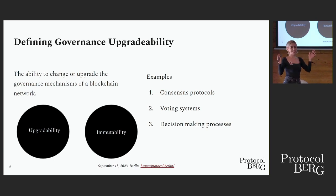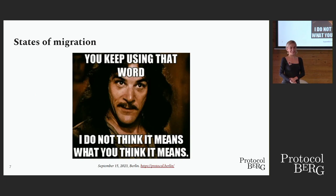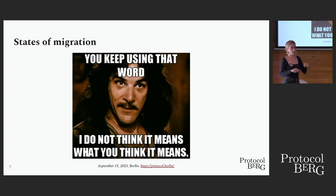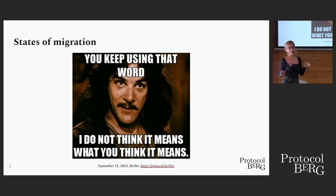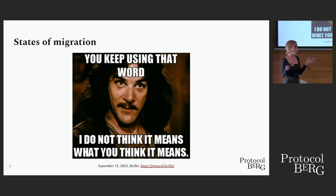I wanted to define upgradeability because I don't think everyone actually knows what it means. When people address immutability and governance upgradability, they often don't understand the difference. Immutability is the concept that you don't want contracts to be revised in any way — no third-party revision to deployed contracts. Upgradable contracts and governance upgradability was a concept coined to make consistent upgrades to existing contracts. I'll now go into the trade-offs and security risks.